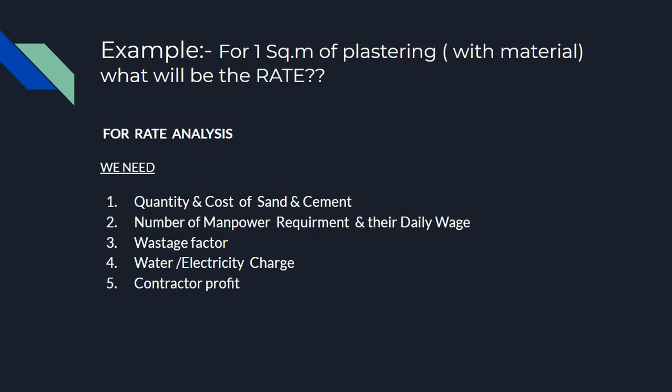I will give you one example. For one square meter of plastering with material, what will be the rate? I will discuss the main points. We need one square meter plastering rate analysis. For rate analysis, what do we need? First, the quantity and cost of sand and cement. Second, the number of manpower required and their daily budget. Third, wastage factor. Fourth, water and electricity charges.